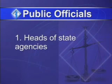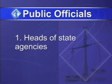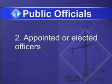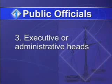Certain people in high-level state government positions get treated differently when there is a complaint about them. These folks are defined as public officials. Public officials are defined as heads of a state agency or their deputies or assistants, members of boards or commissions the governor must appoint or other elective officers, and executive or administrative heads of departments, bureaus, divisions, or institutions. If you are in state government, learn this definition and figure out who it applies to in your agency.